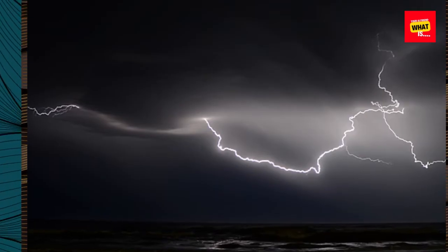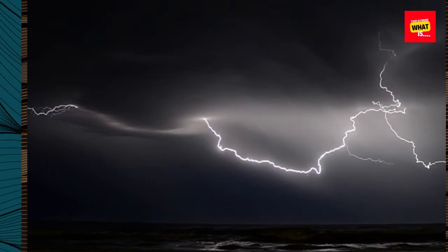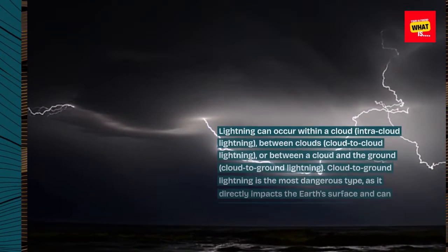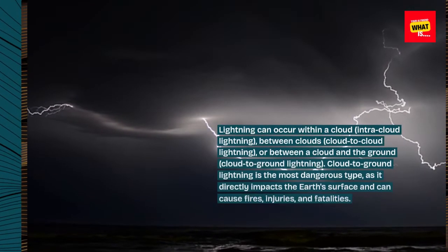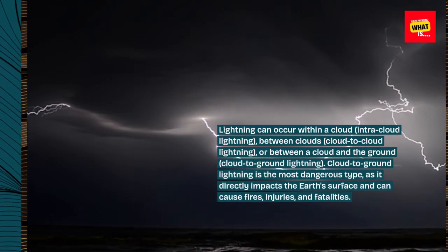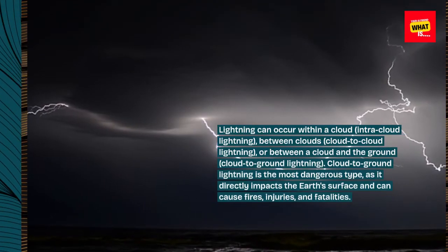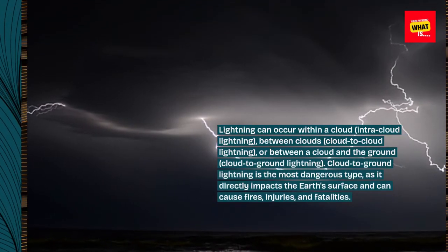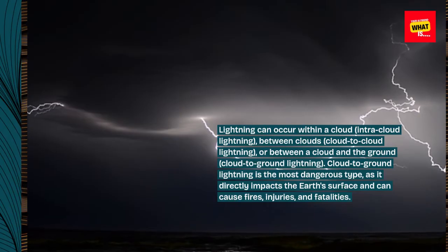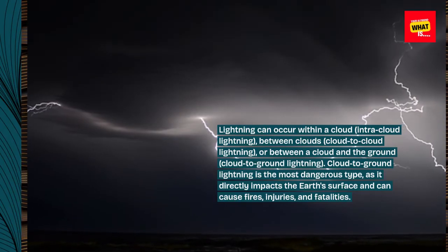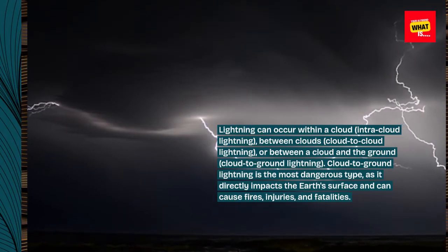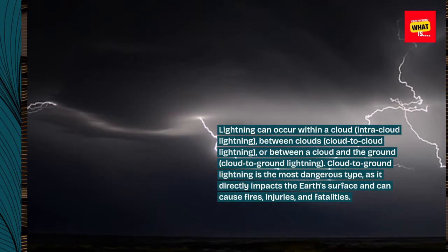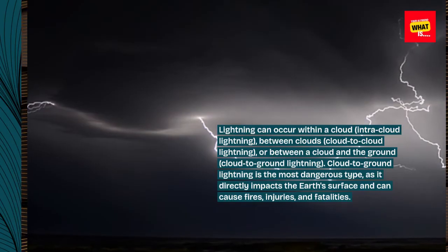Lightning can occur within a cloud (intra-cloud lightning), between clouds (cloud-to-cloud lightning), or between a cloud and the ground (cloud-to-ground lightning). Cloud-to-ground lightning is the most dangerous type, as it directly impacts the Earth's surface and can cause fires, injuries, and fatalities.